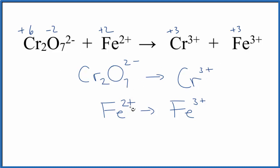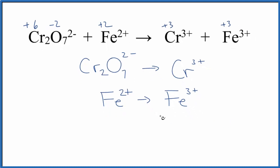For the iron, we went from 2+ to 3+. So this is a larger number. We've been oxidized. We've actually lost an electron. That's why we've gone to 3+. So these are the half reactions.